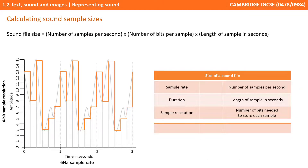You also need to be able to, in the exam, figure out or calculate the file size of a sound sample. This is done by the formula: the number of samples per second (the sample rate), times by the number of bits per sample (the sample resolution), times by the length of the sample in seconds.